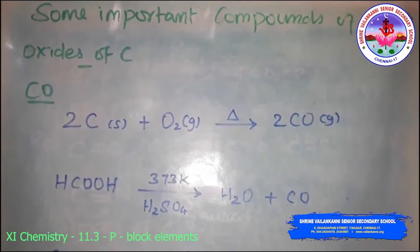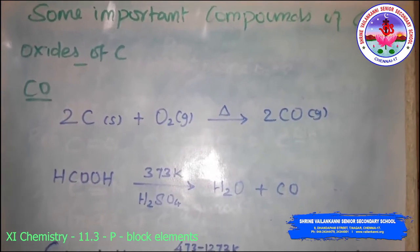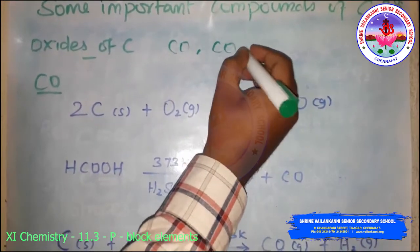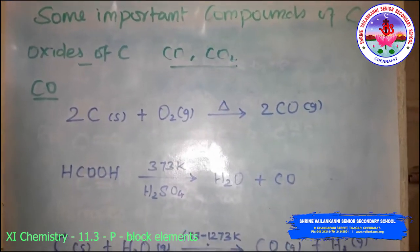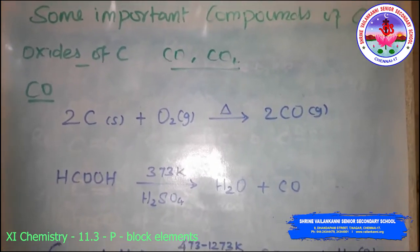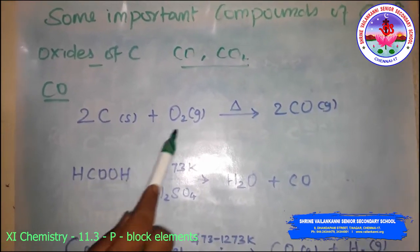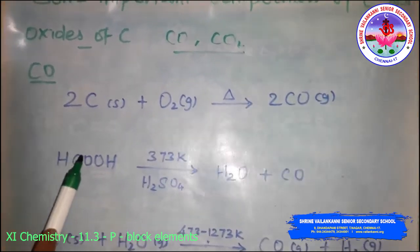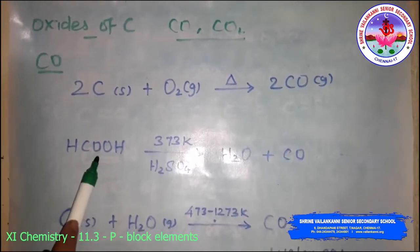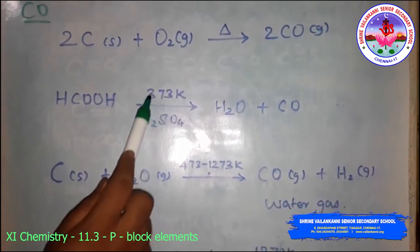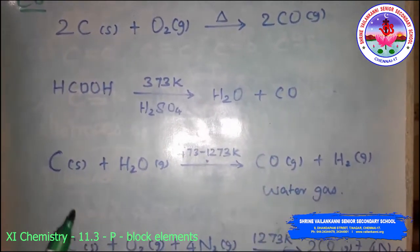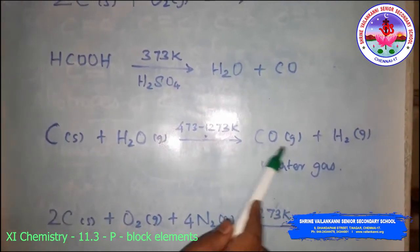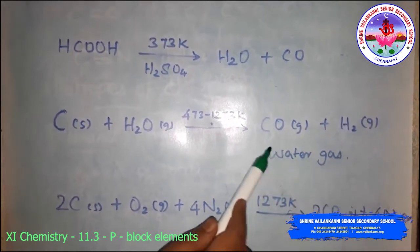The oxides of carbon are carbon monoxide and carbon dioxide. The preparation of carbon monoxide: direct oxidation of carbon in a limited supply of oxygen or air gives carbon monoxide. On a small scale, pure carbon monoxide is prepared by the dehydration of formic acid with concentrated sulfuric acid at 373 K. On a commercial scale, it is prepared by passing steam over hot coke; the mixture of carbon monoxide and hydrogen gas produced is called water gas or syngas.